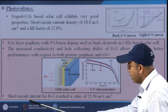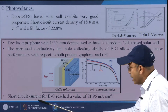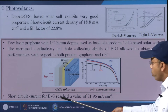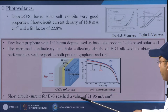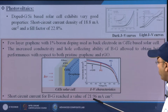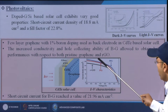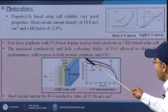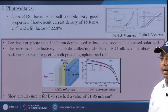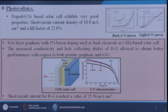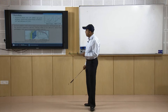When increasing the voltage and current density, boron-doped graphene gives maximum performance at that level. The short circuit current for boron graphene reached a value of 21.96 mA/cm² — showing how the short circuit current increases simply by doping with boron.